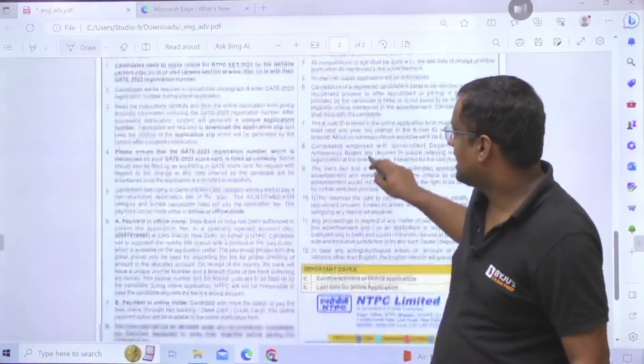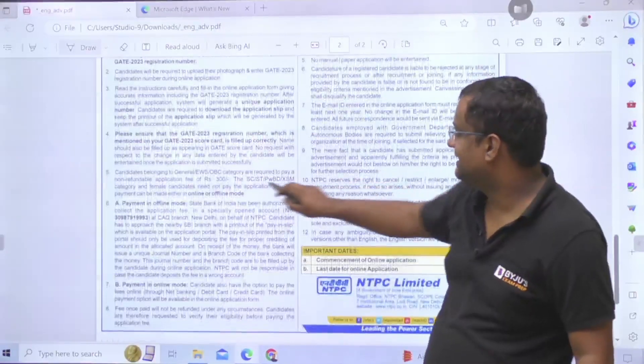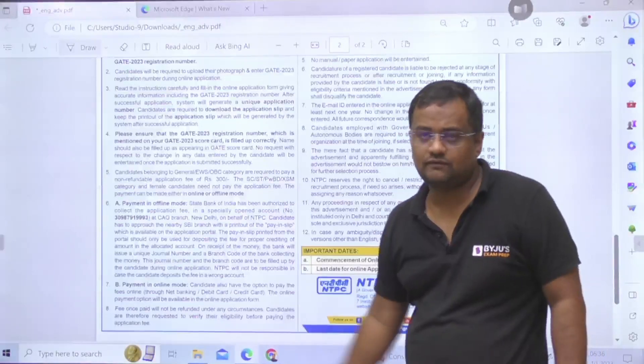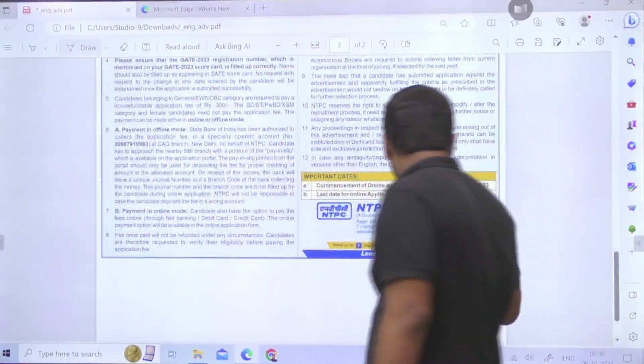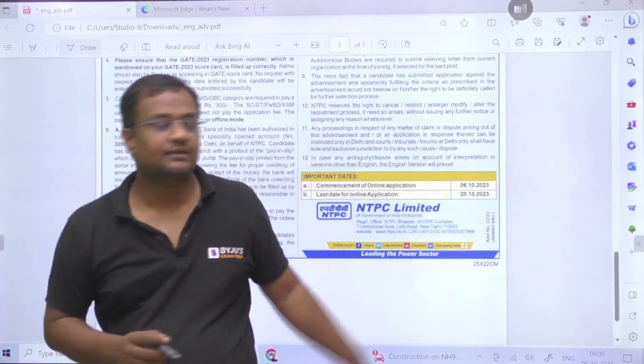Fees: 300 for General, EWS, and OBC. For others, fees exempted. You can fill the form from 6th October to 20th October.